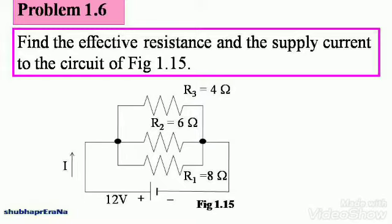The total supply current is just given as I, we need to find that out. And the supply voltage is 12 volts. You can see that the three resistances are connected in parallel.